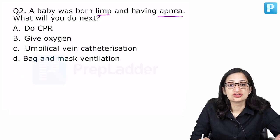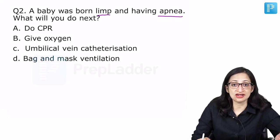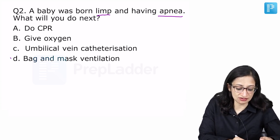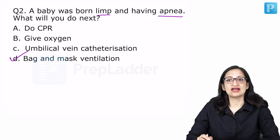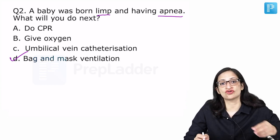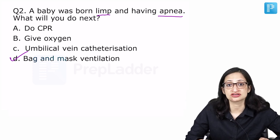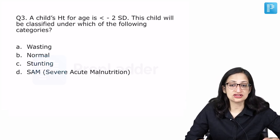Moving back to our question, the baby was born limp and was having apnea. What will you do next? Of course we are going to start bag and mask ventilation for this baby, and we all know that there is one absolute contraindication for bag and mask ventilation that is congenital diaphragmatic hernia, which is also asked many times.